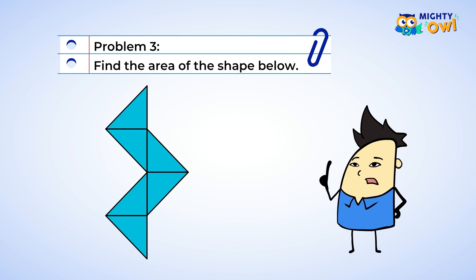Whoa. Look at all those triangles. This means that there are a lot of halves. No worries. We know that two halves make one whole, or two triangles make one square unit. So let's find as many pairs of two as we can.